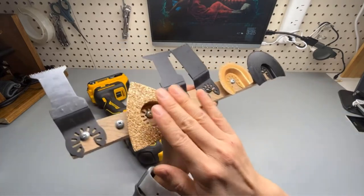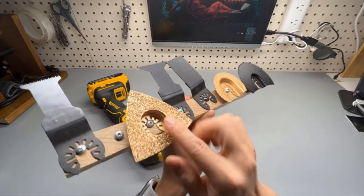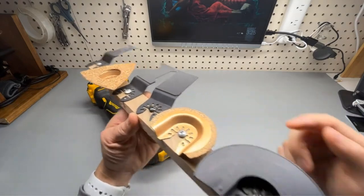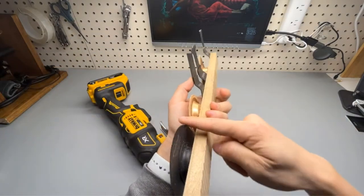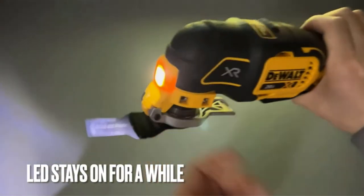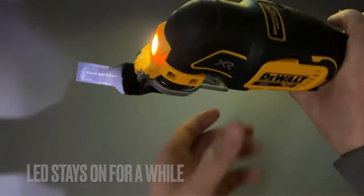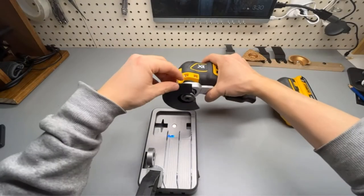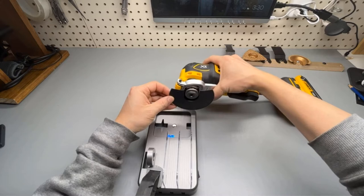Dual grip variable speed trigger gives you the ultimate speed and application control. Its quick change accessory system allows you to change blades and attachments quickly without using any wrenches. Bright LED light helps you working in dark work surfaces for accurate cutting.